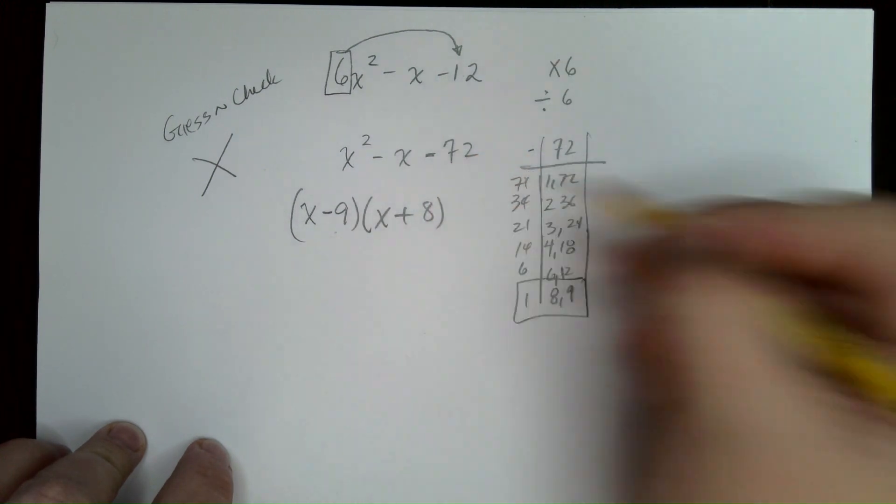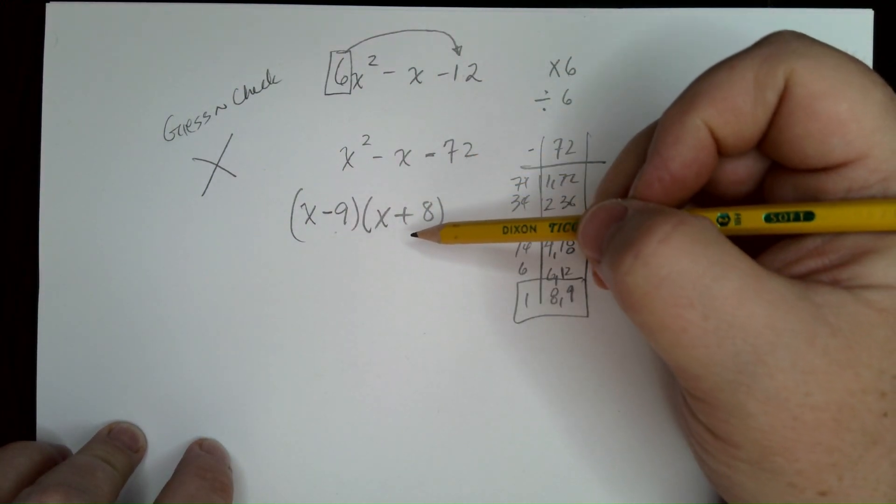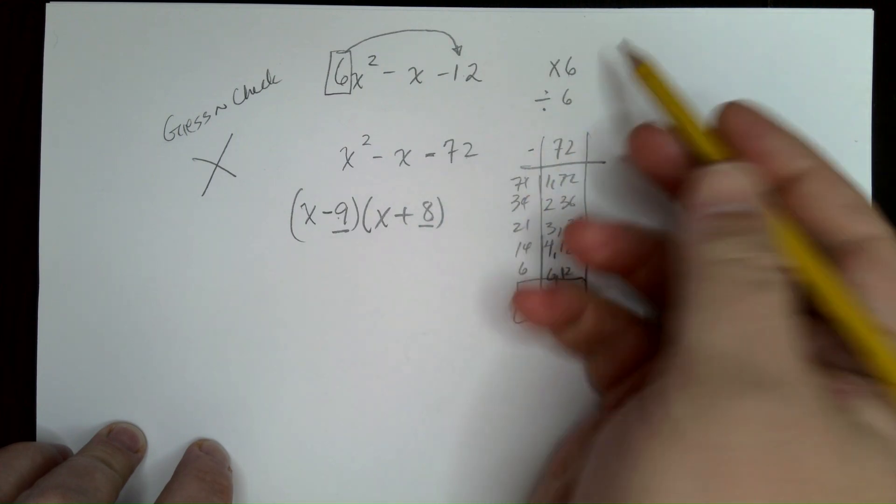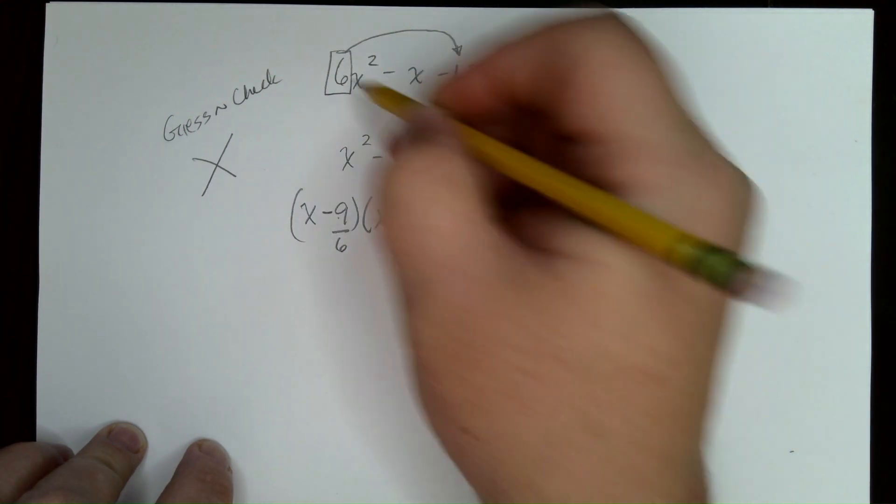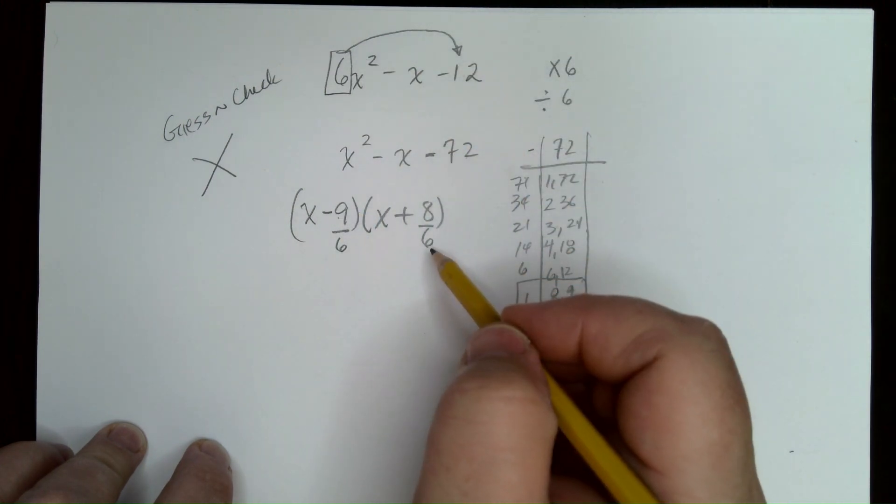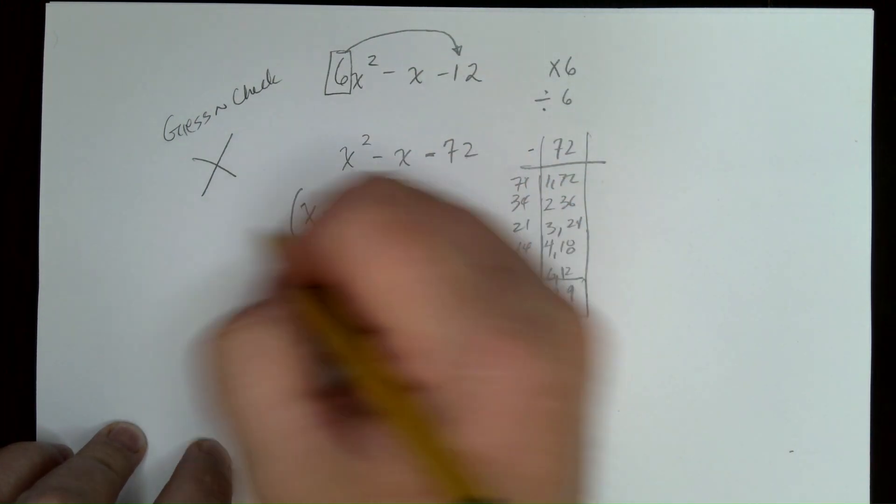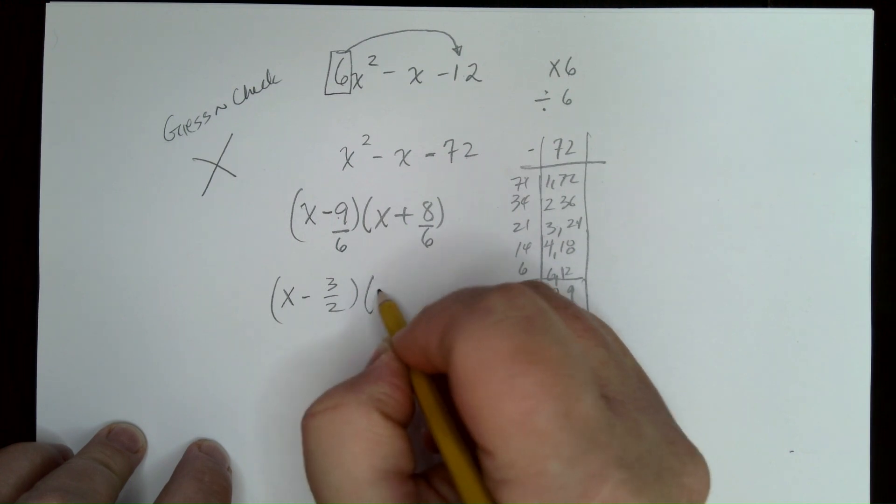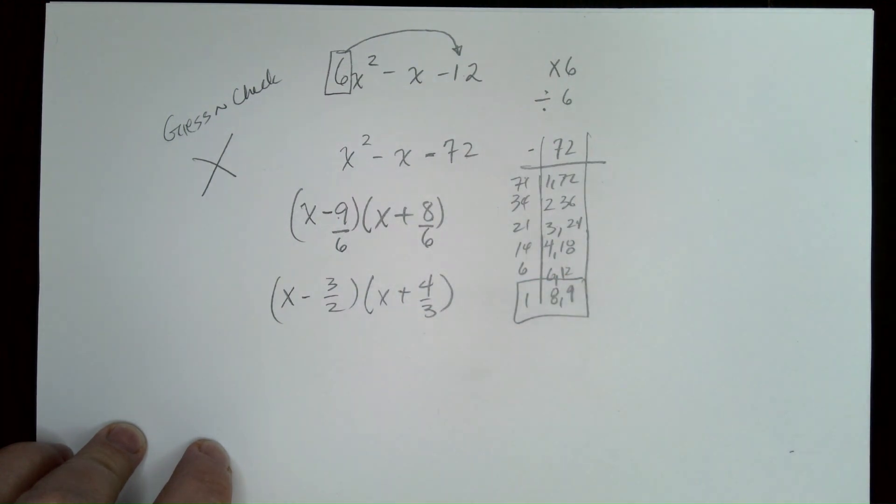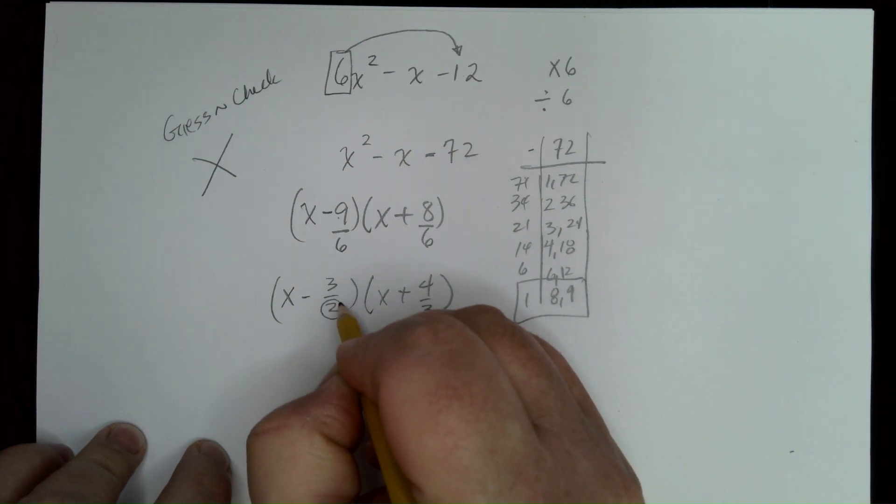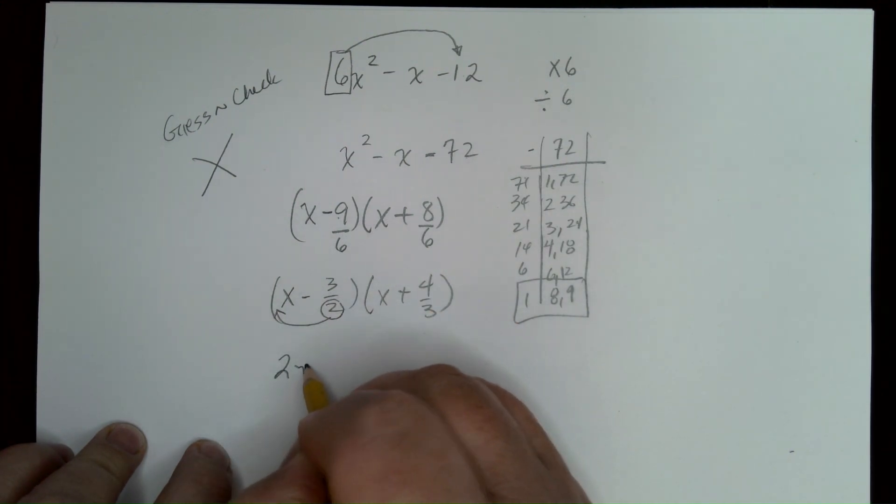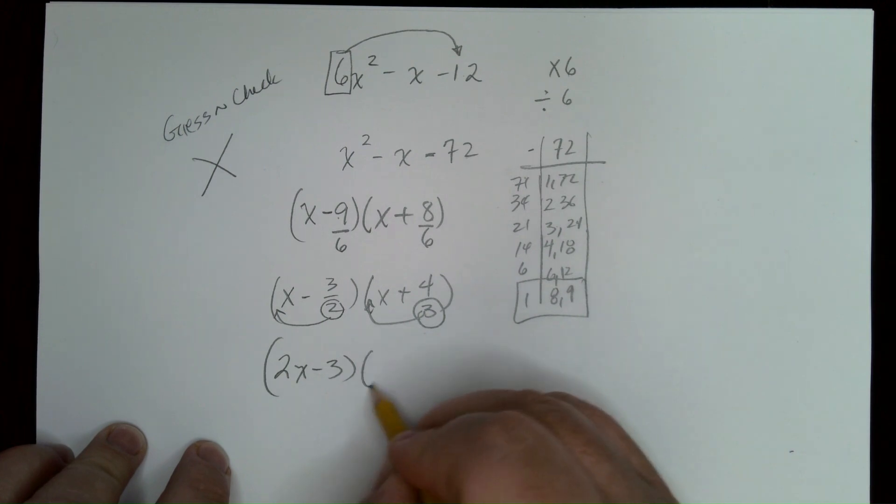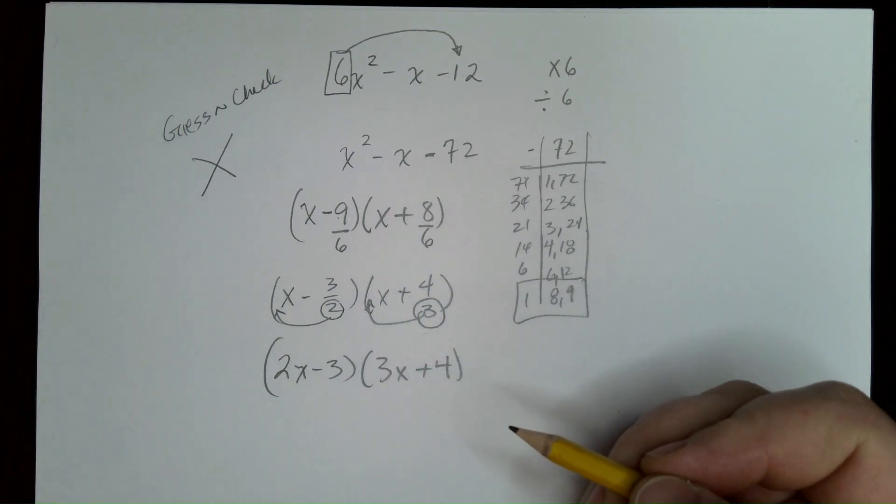Okay. So, now, at the beginning, we multiplied by 6. So now we're going to take and we're going to divide this number right here, these last two numbers, by that 6 to take it out like this. So, we multiplied by 6 at the beginning. We factored it. Now we're going to divide by 6. Then we reduce. So, divide by 6. Now we're going to reduce. Let's see. 3 over 2. 4 over 3. Right? So, to get our final answer right here, what we're going to do is this 2 is going to be a coefficient. So, we're going to have 2x minus 3. And over here, this 3 is going to go here. So, we're going to get 3x plus 4. That's our answer right there.